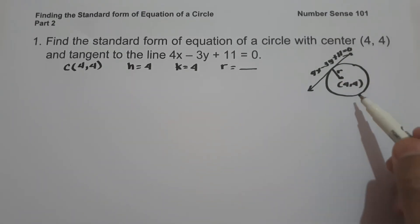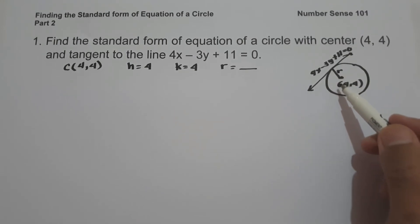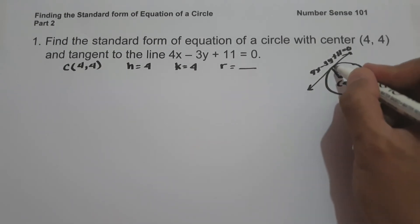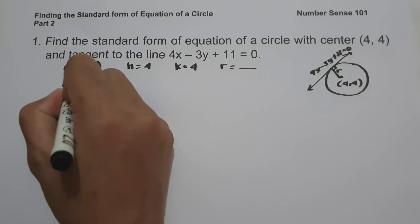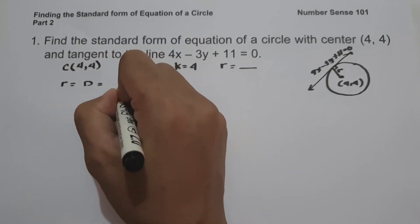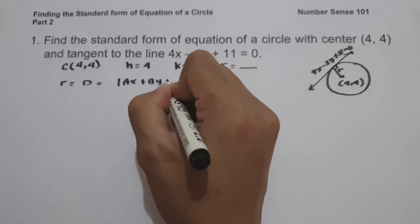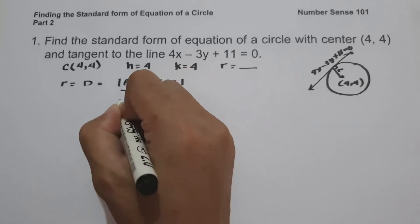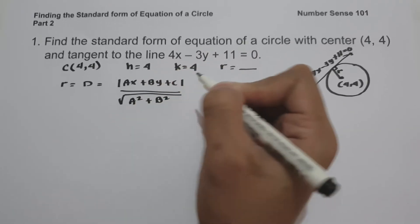As you can see, we have a circle tangent to a certain line. Always remember, if a circle is tangent to a certain line, the tangent line is always perpendicular to the radius. And to find the radius, we are going to use the formula for the distance between a line and a point: absolute value of ax plus by plus c, all over square root of a squared plus b squared.